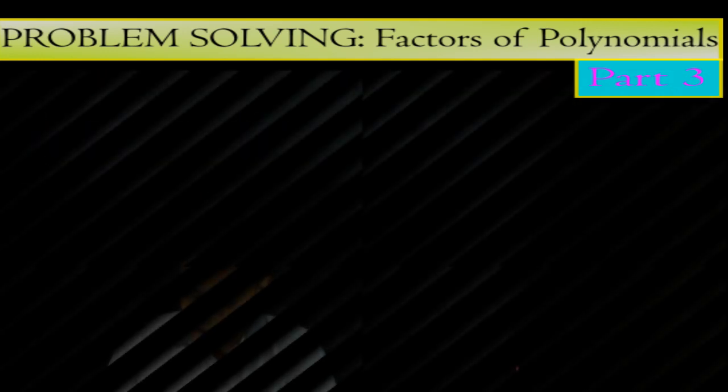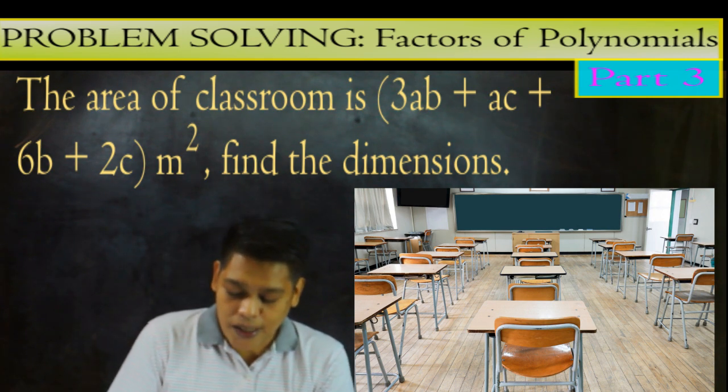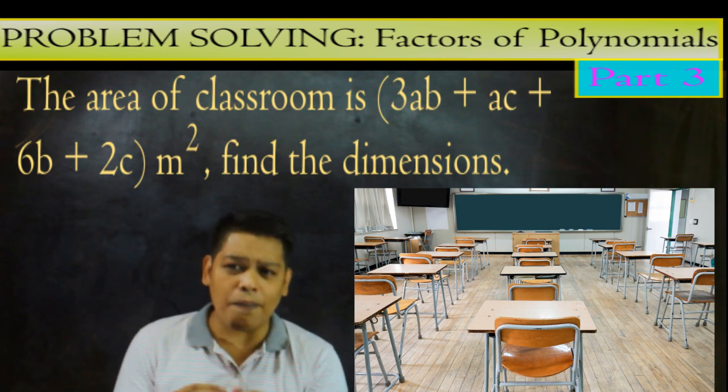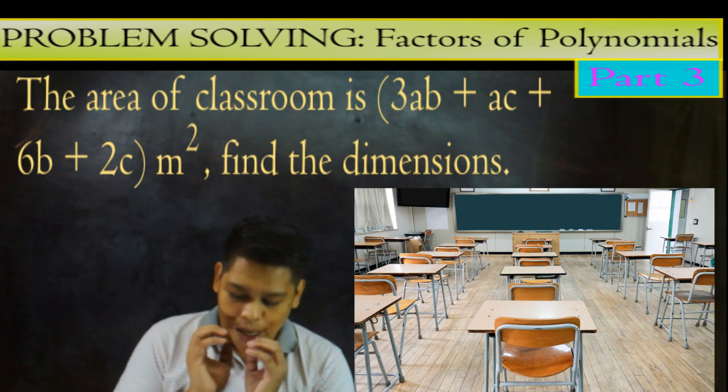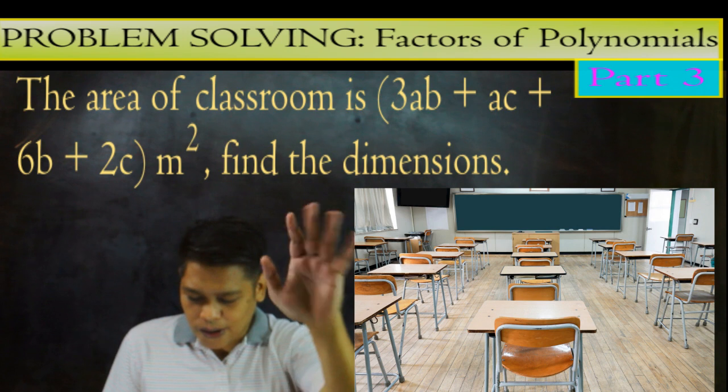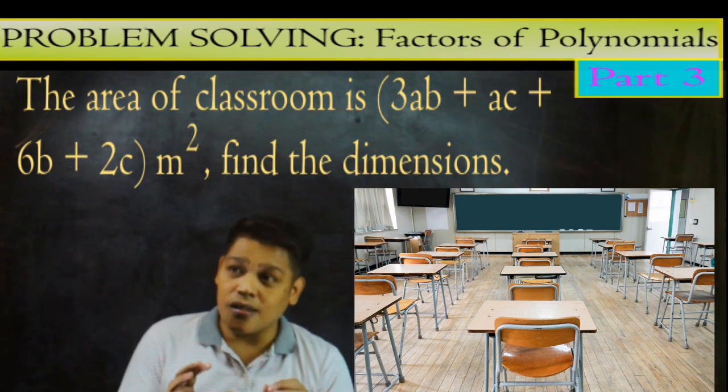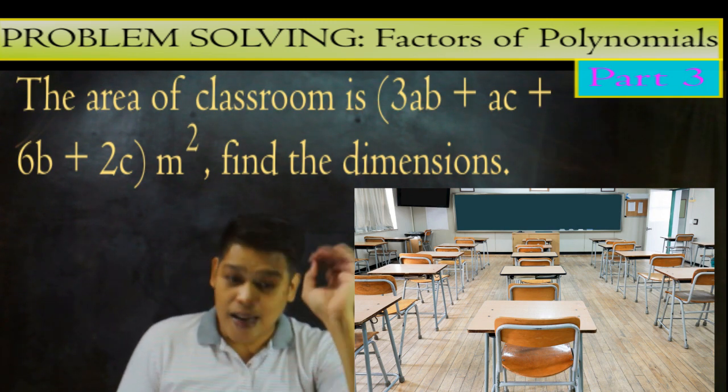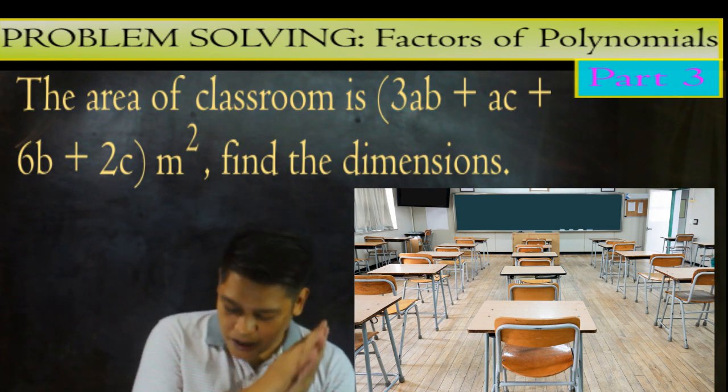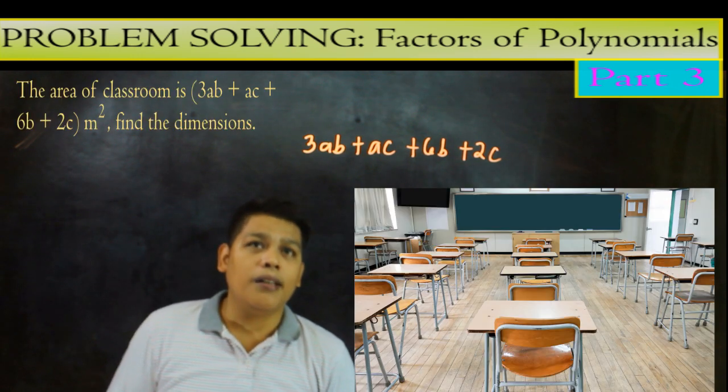So example number 3. In an area of a classroom is 3ab plus ac plus 6b plus 2c meter squared 5d dimension. So this time, factoring by grouping tayo. So ang classroom daw ito yung kanyang area. So ngayon ang gagawin natin dito what is the dimension? Alam natin ang area ng classroom is the length times the width. So ipapactor natin ito and then hahanapin natin yung kanyang dimension.